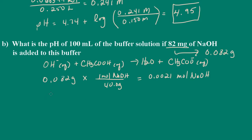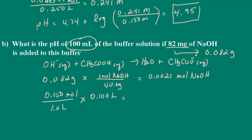Next, we need to determine how many moles of acetic acid are present before the addition of the sodium hydroxide. We know we had 0.15 moles of acetic acid per liter of solution, and we're told we have 100 milliliters, which is 0.1 liter. That gives us 0.015 moles of acetic acid before the addition of the sodium hydroxide.